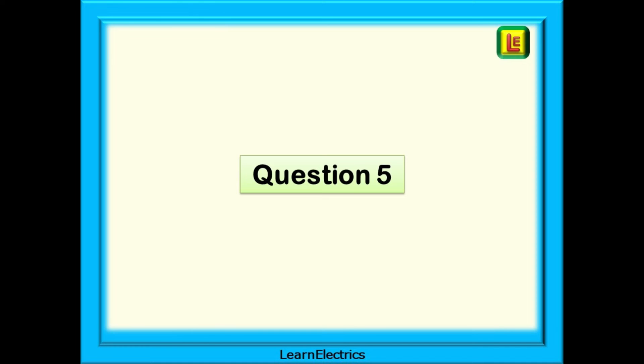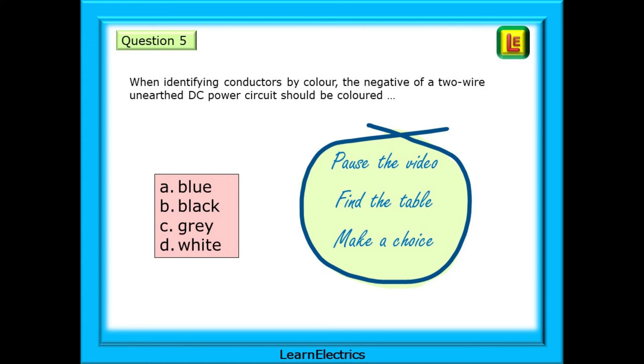Moving on to question number 5 now. The question asks, When identifying conductors by colour, the negative of a two-wire unearthed DC power circuit should be coloured what? And four choices. Pause the video. Find the table. Make a decision.